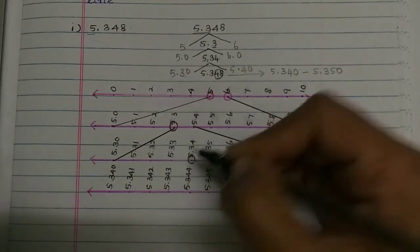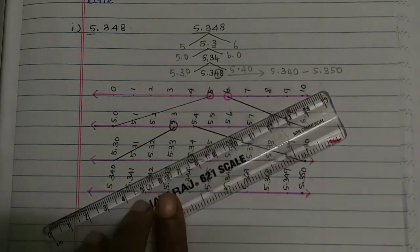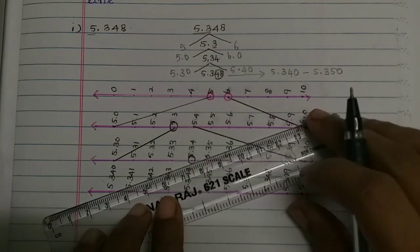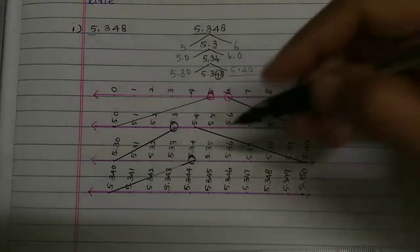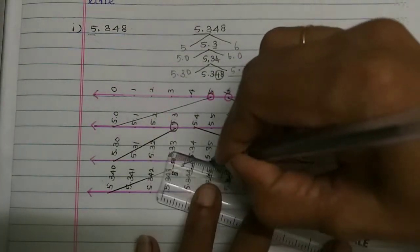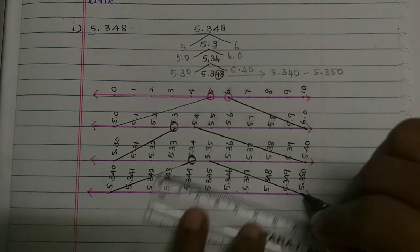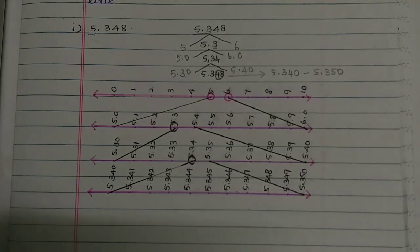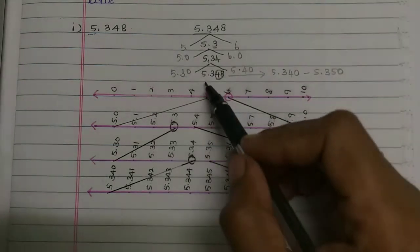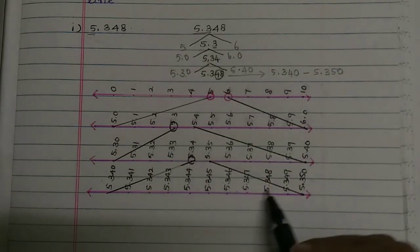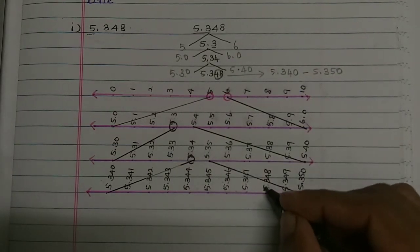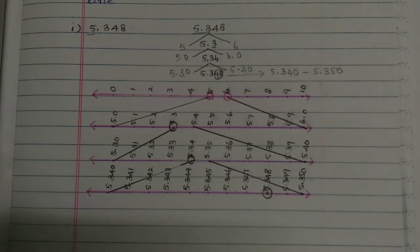5.34 is here. We can locate the number 5.34 between 5.30 and 5.40. So we can find the number 5.34. This is the number we have to look at — that is all.